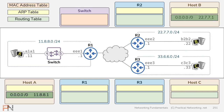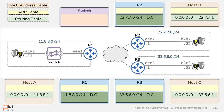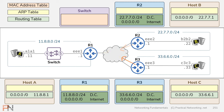Host B will also have a default gateway pointing to router 2's interface IP address: 22.7.7.1. And host C will also have a default gateway pointing to router 3's interface IP address: 33.6.6.1. Each of our routers will have two routes: a directly connected route for the networks they are attached to — for example, R1 has a directly connected route for the 11.8.8.0/24 network — and a default route pointing to the internet. Normally that default route would point to a specific router IP address on the internet, but to keep things simple, we'll abstract that away and say the route points simply to the internet. And now we are ready for host A to send some data.